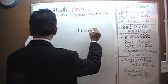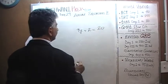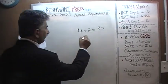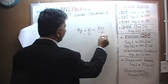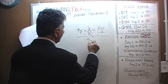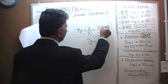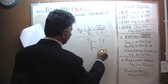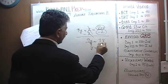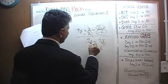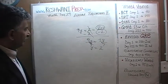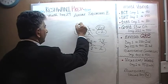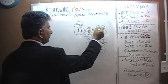9y plus 2 is 20. Subtract 2 from both sides. 2 is going to cancel out. 9y equals 20 minus 2 which is 18, and therefore y is equal to 2. We divide both sides by 9. Once we find that y is equal to 2, put it back in here. 9 times 2 is 18. 18 plus 2 is 20. Let's do the next one.